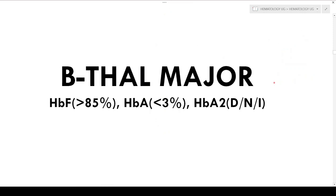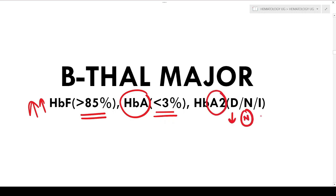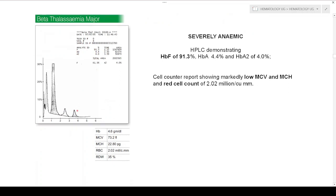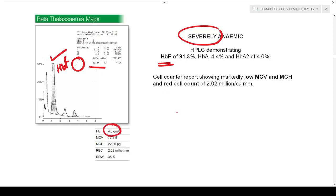Now we are going to see beta thalassemia major. Predominantly, HbF levels are more than 85% — very high. HbA — the normal adult hemoglobin — is very less, less than 3%. HbA2 levels might be decreased, normal, or increased. The most important point is that HbF levels are very high, whereas HbF is normal in beta thalassemia minor. The patient is severely anemic. As you can see, the HbF window is 91.3%, with hemoglobin around 4.6 g/dL.